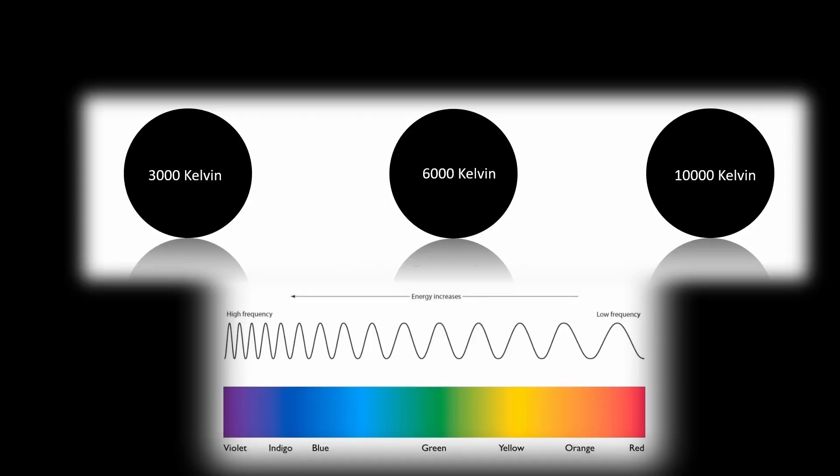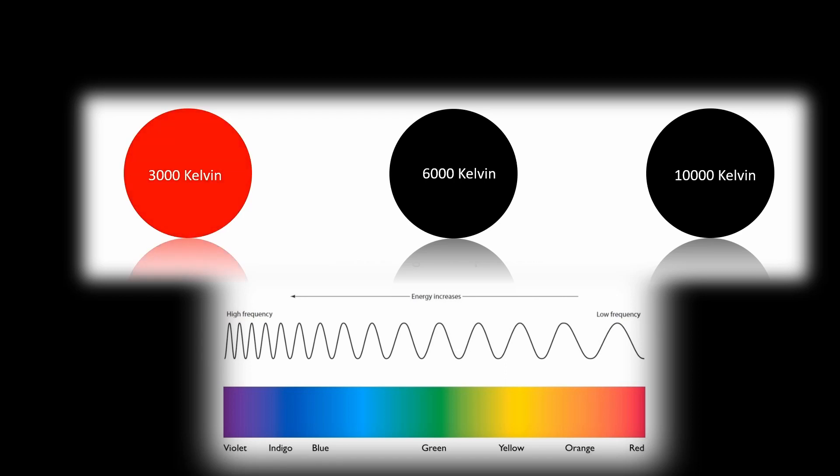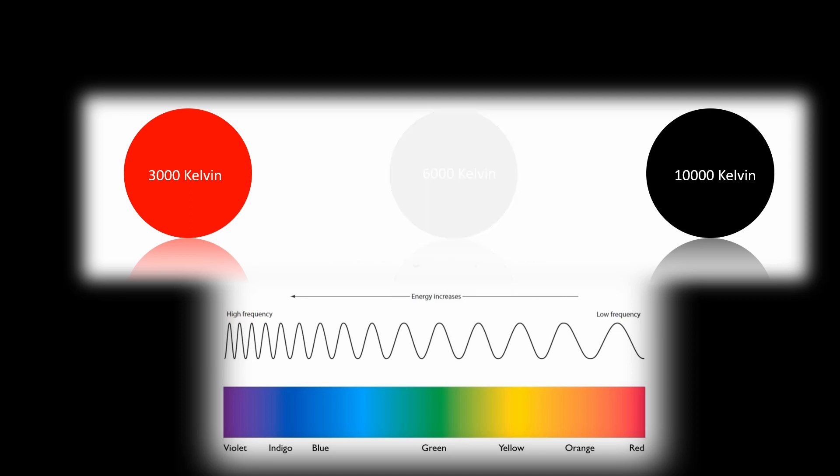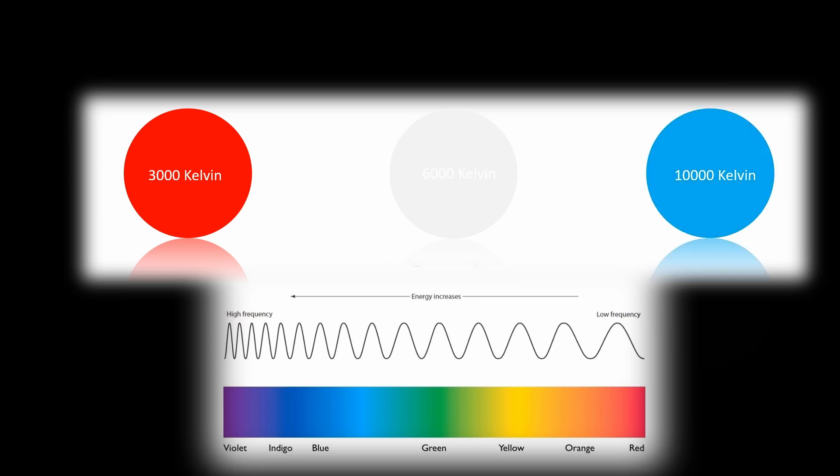So to clarify further, here are some made up examples. A black body at 3000 Kelvin appears reddish because it emits more in the red part of the spectrum. A black body around 6000 Kelvin appears white because it emits a balance of all mixed colors in the visible light spectrum. A black body at 10,000 Kelvin appears bluish because it emits more in the blue and violet or UV.